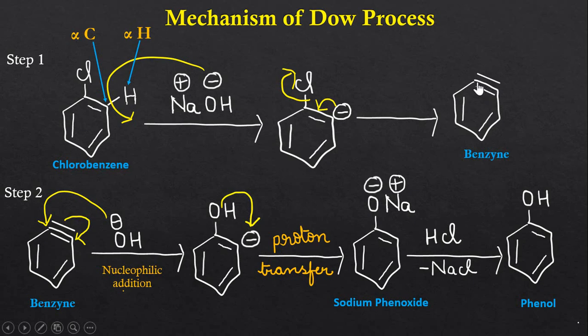In this benzyne intermediate, you can see this extra pi bond which is formed outside the ring. This extra pi bond is formed by two sp2 hybridized orbitals of these two carbon atoms overlapping with each other.